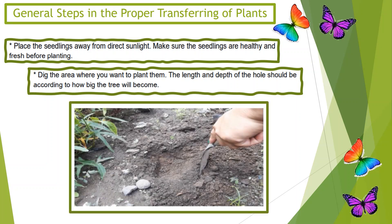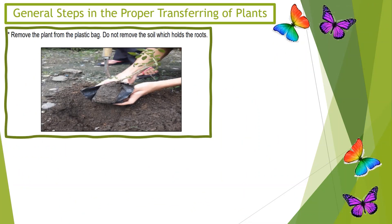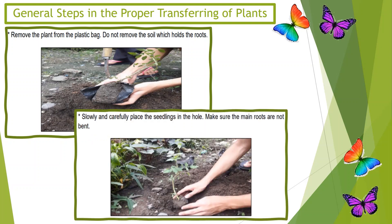Step 3: Remove the plants from the plastic bag. Do not remove the soil which holds the roots. Step 4: Slowly and carefully place the seedlings in the hole. Make sure the main roots are not bent.